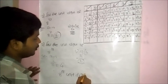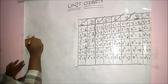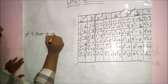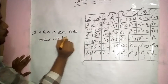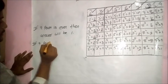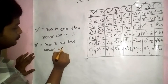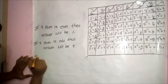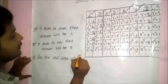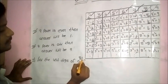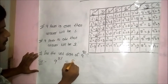For base 9: if the power is even, the answer is 1; if the power is odd, the answer is 9. Example: find the unit digit of 9 power 81. The power 81 is odd, so the answer is 9. Therefore 9 power 81 unit digit is 9.